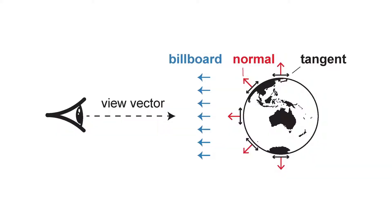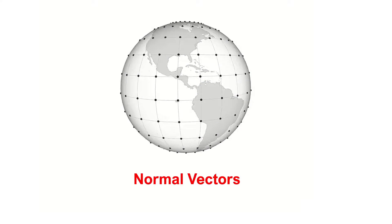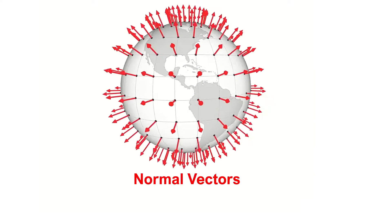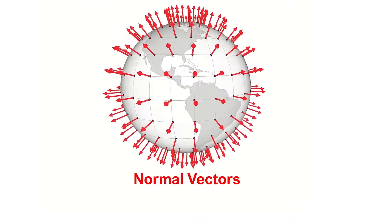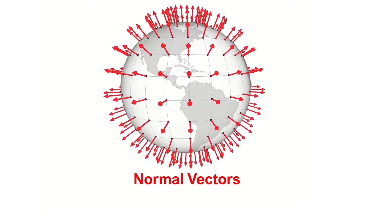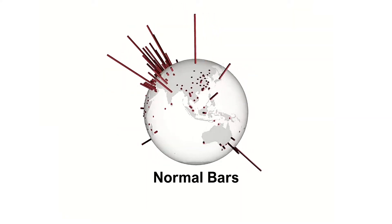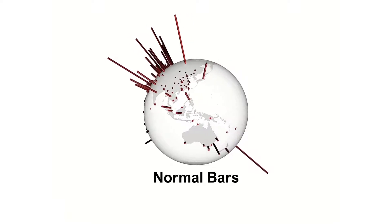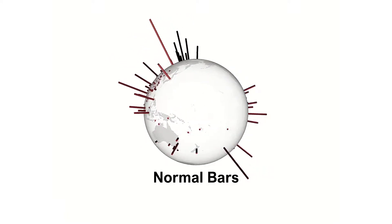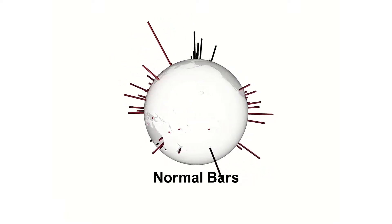In our study, we look at the directions along which visual primitives are aligned on the surface of the globe. These are normal vectors on the globe. Aligning 3D bars along the normal vectors creates the normal bar visualization idiom.